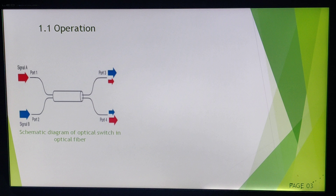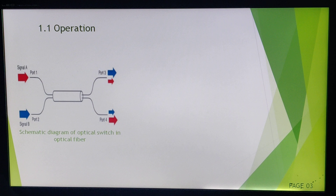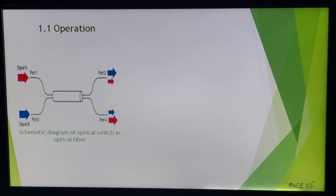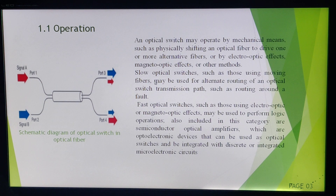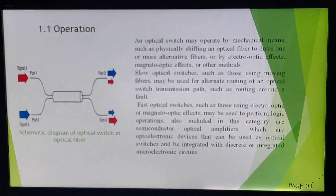There are two types of optical switching: slow optical switching and fast optical switching. Slow optical switching may be used for alternate routing of an optical transmission path, such as routing around a fault. Fast optical switches use electro-optic or magneto-optic effects and are generally used for logic operations. This electro-optic switch is also used with semiconductor optical amplifiers, which are optoelectronic devices that can be used as optical switches and can be integrated with discrete or integrated micro-electronic circuits.